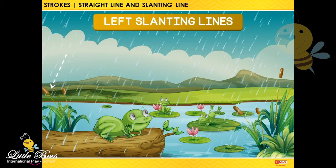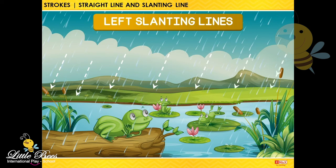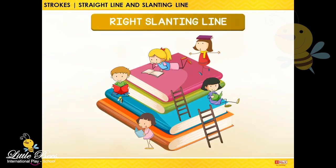Look at the raindrops. They are forming left slanting lines. Now look at the slanting lines made by the ladder. They are right slanting lines.